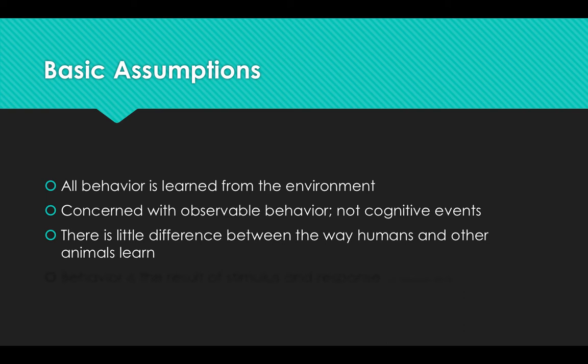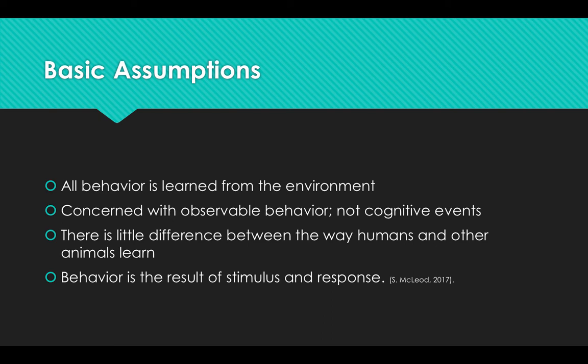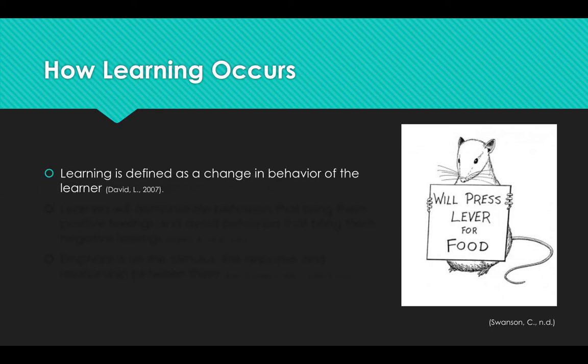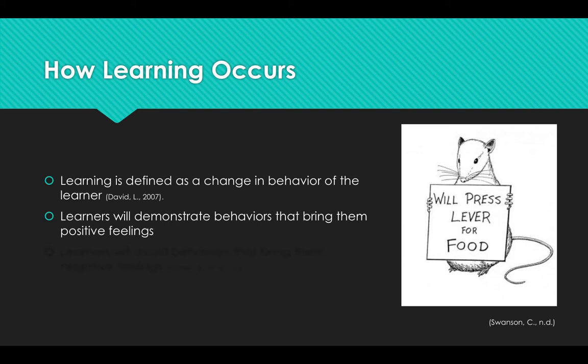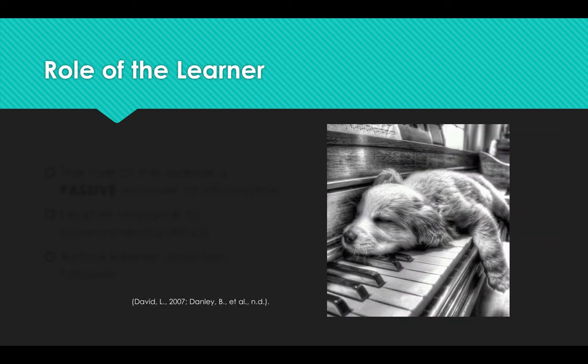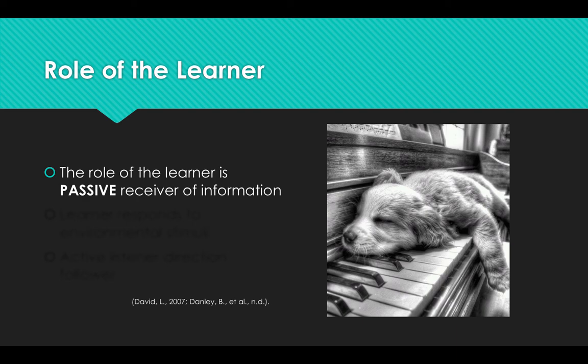There is little difference between the way humans and other animals learn. Perhaps most prominently, behavior is the result of stimulus and response. This theory defines learning as a change in behavior of the learner. Student motivation is extrinsic and based only on reward and punishment; learners will demonstrate behaviors that bring them positive feelings and avoid behaviors that bring them negative feelings.